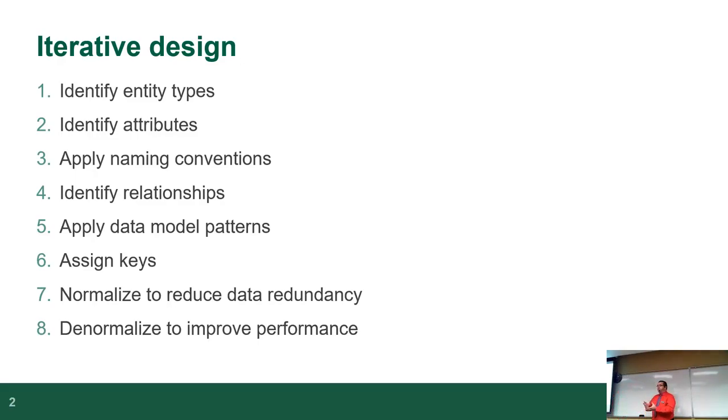So there are eight steps to database design. First step is you identify the entity types. Identify the attributes. You apply the naming conventions. Believe it or not, naming conventions mean something. You identify relationships. You apply data model patterns. You assign the keys. And then now this is when the primary keys are created. You then normalize, so you take your data, you normalize redundancy.